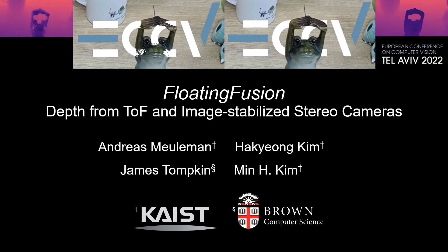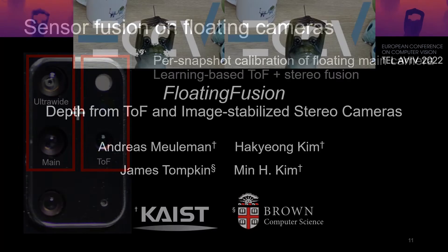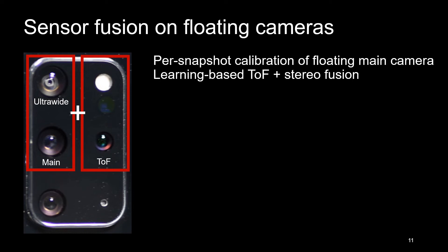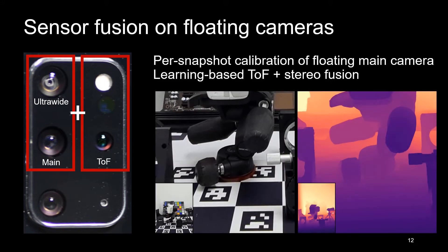Yes, we present floating fusion, depth from ToF and image-stabilized stereo cameras. Our approach performs per snapshot calibration of all main camera parameters that performs deep learning based ToF and stereo depth fusion. This reduces noise and increases resolution. It takes 6 seconds for a 3 megapixel depth output.